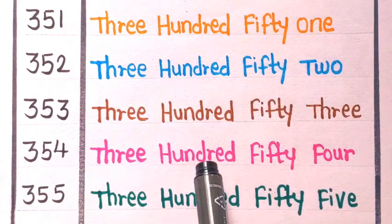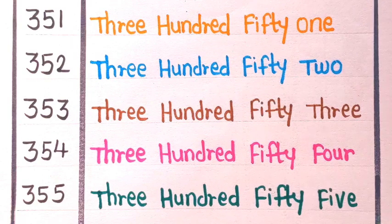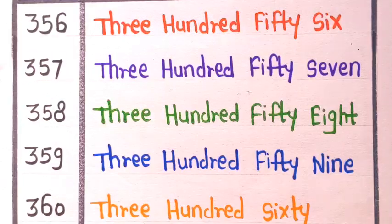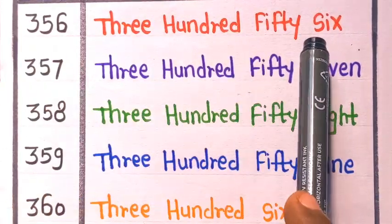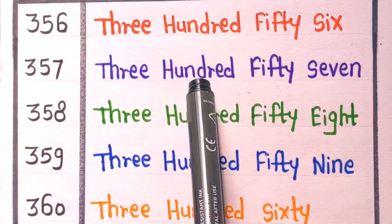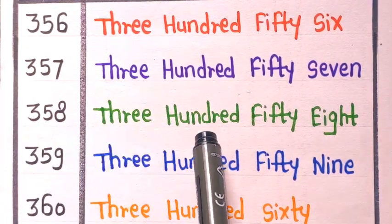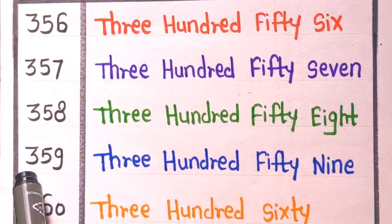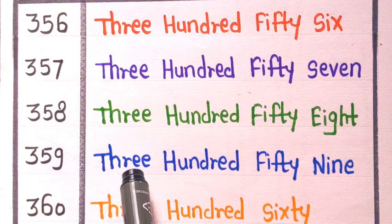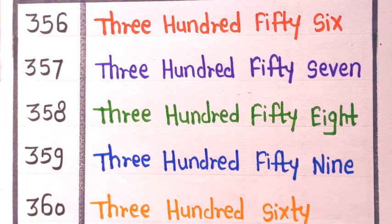Three fifty-four: 354. 355, 356, 357, 358, 359, and 360 is 360.